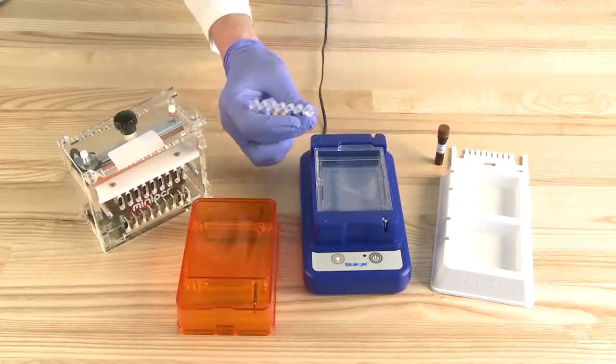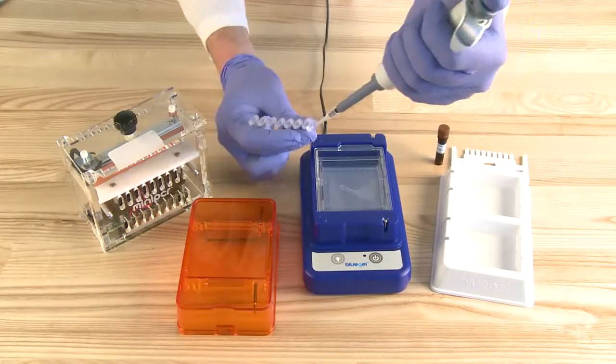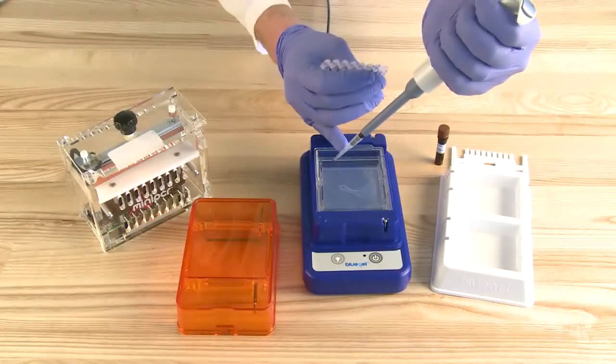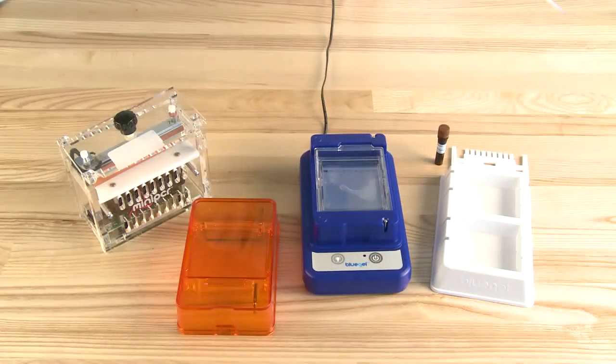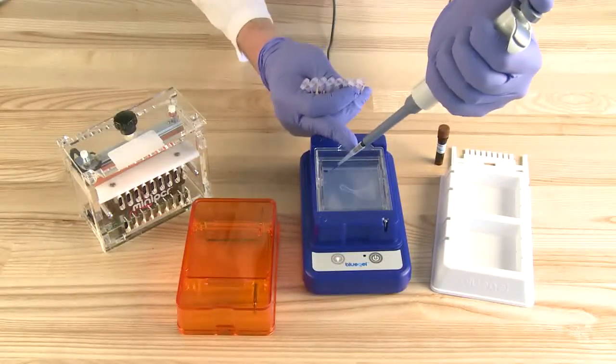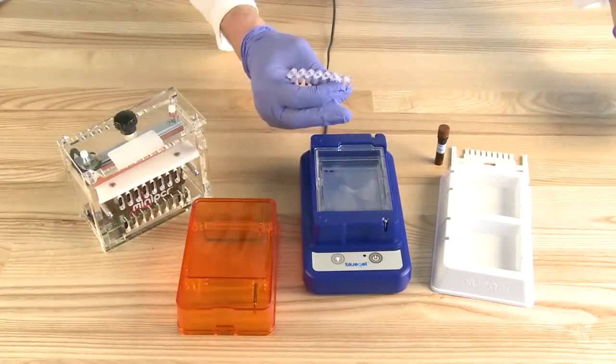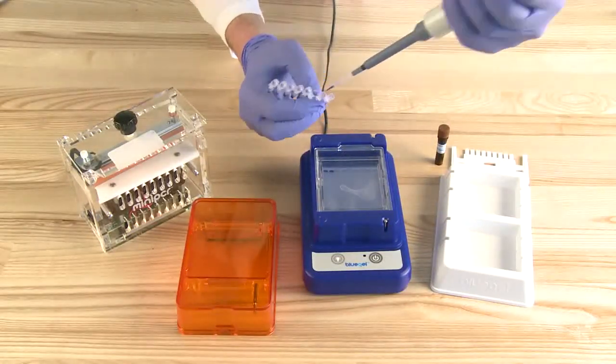Carefully pipette into the wells. Make sure not to puncture the gel. 20 microliters can be loaded into wells formed by 9 well combs and 10 microliters in wells formed by 13 well combs.